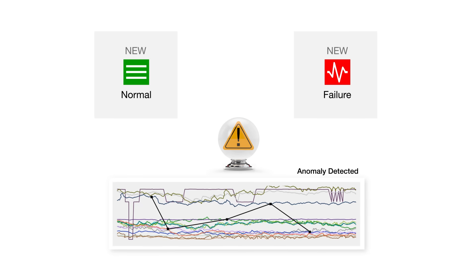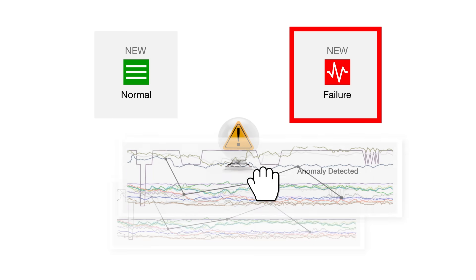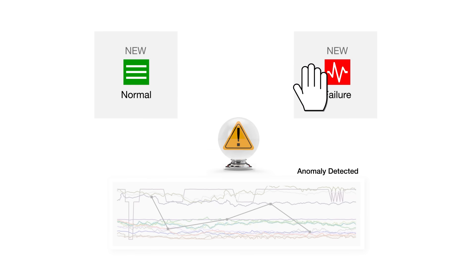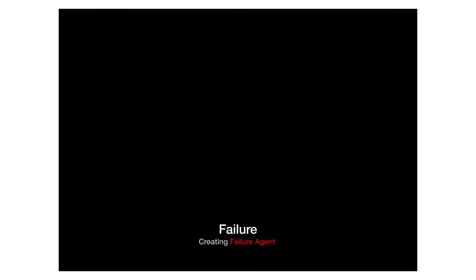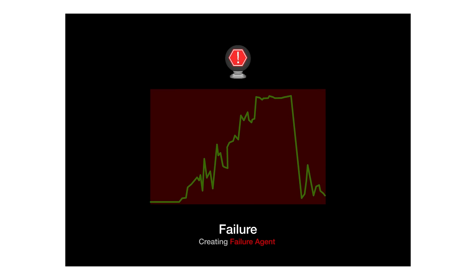If categorized as a new failure, action requires immediately creating a new failure agent. If the behavior occurs again in the future, it will be recognized earlier and with greater accuracy.